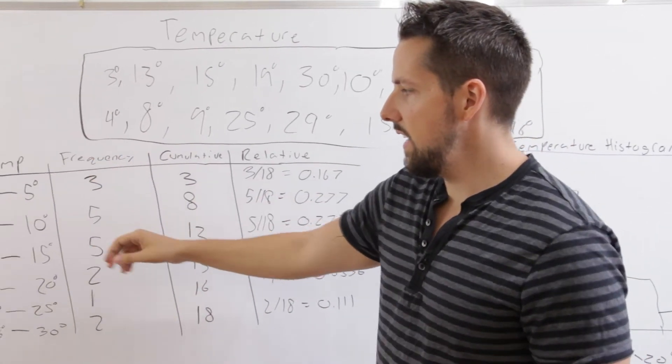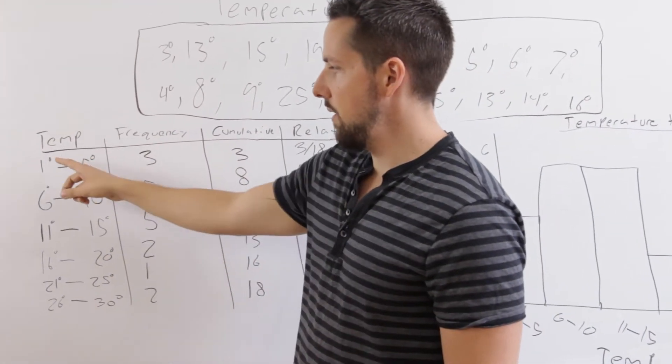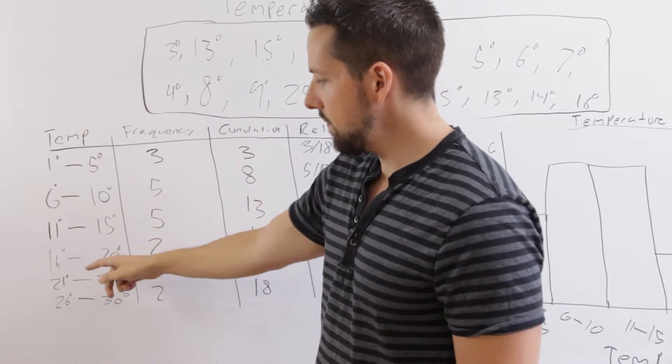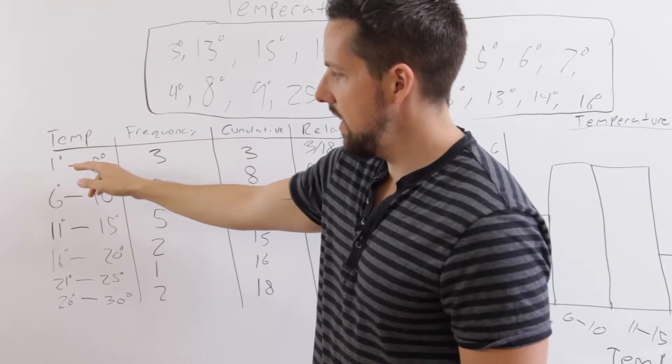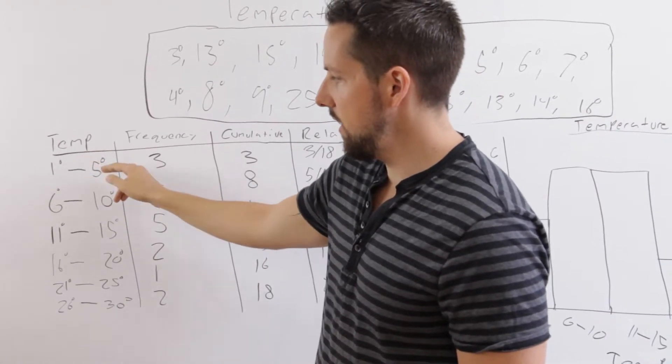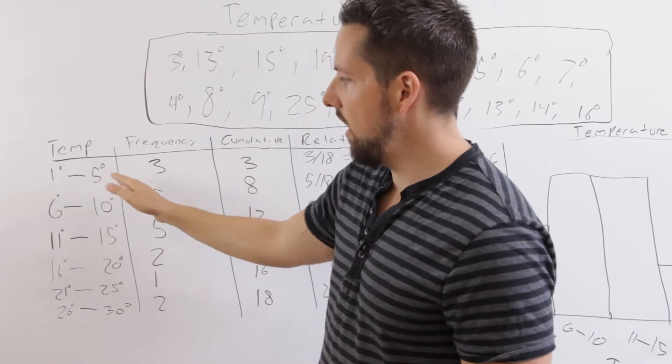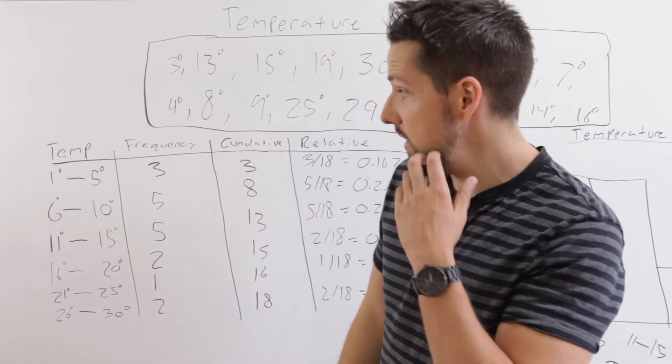So we organize the data into a table, and because it's a histogram, everything has to be in ranges. When you're doing a range of data, you have to make sure that all the ranges are the same. So each one of these increases by four. You can't have uneven ranges or else your data will be messed up.